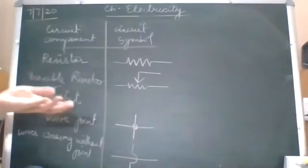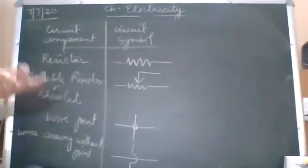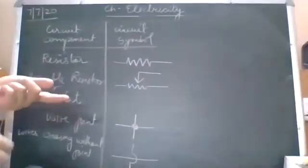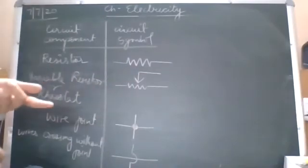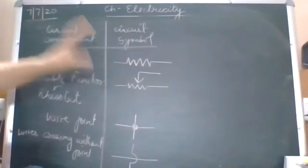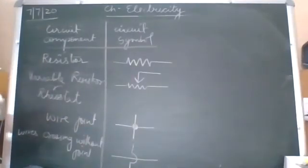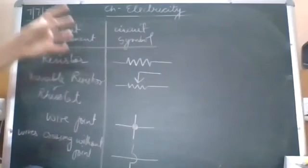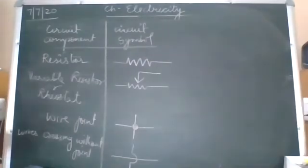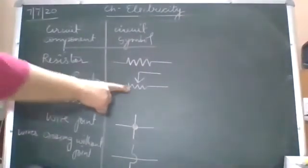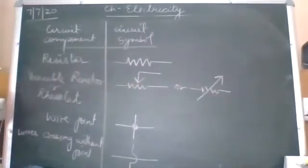If we were in school, we could go to the lab and see all these components actually. For now we have that limitation. I have posted the Ohm's law video in 10th D Google Classroom, and I will be doing it for 10th A as well, so you will have an idea of how these components look in reality. The arrow on the variable resistor symbol shows that the value is varying.